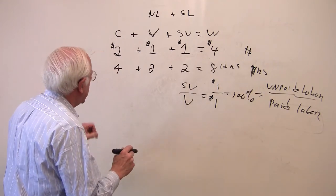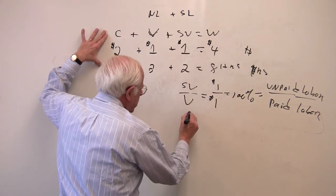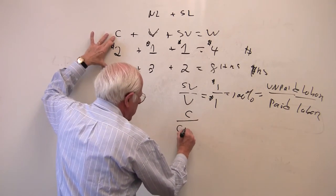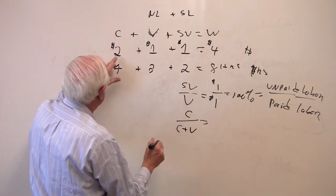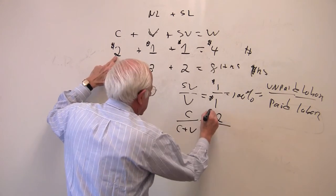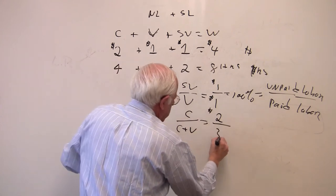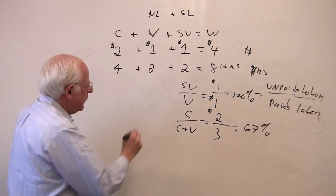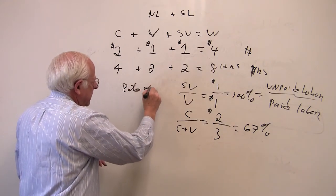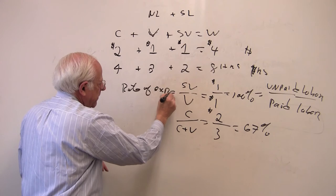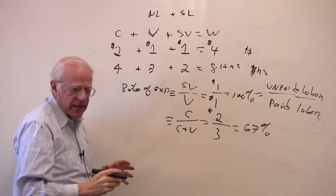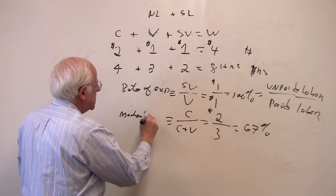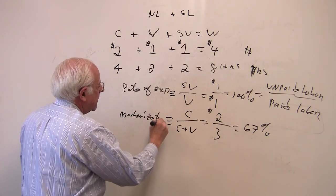Another measure by Marx is the relationship of the total value of the means of production to the total cost of production, which in this case would be $2 over $3, or 67%. So the first one, again, is the rate of exploitation. This one is an index of mechanization.